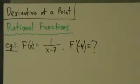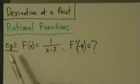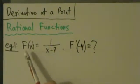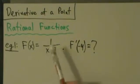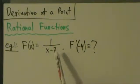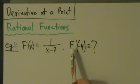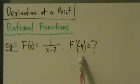Let's go ahead and continue our examples with finding derivatives at a point. Here we're going to start with rational functions. Example 1: big F of x is 1 over x minus 7, and we want to find f prime of negative 4.